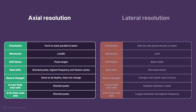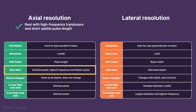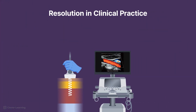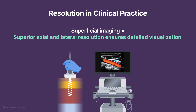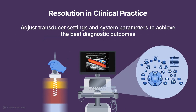Each type of resolution contributes uniquely to diagnostic imaging. Axial resolution is optimized with high frequency transducers and short spatial pulse length. Lateral resolution improves with beam focusing techniques and narrower beam width. In clinical practice, the optimal balance between these resolution types depends on the imaging scenario. In superficial imaging, superior axial and lateral resolution ensures detailed visualization of fine structures. Adjusting transducer settings and system parameters allows sonographers to achieve the best diagnostic outcomes for various clinical applications.